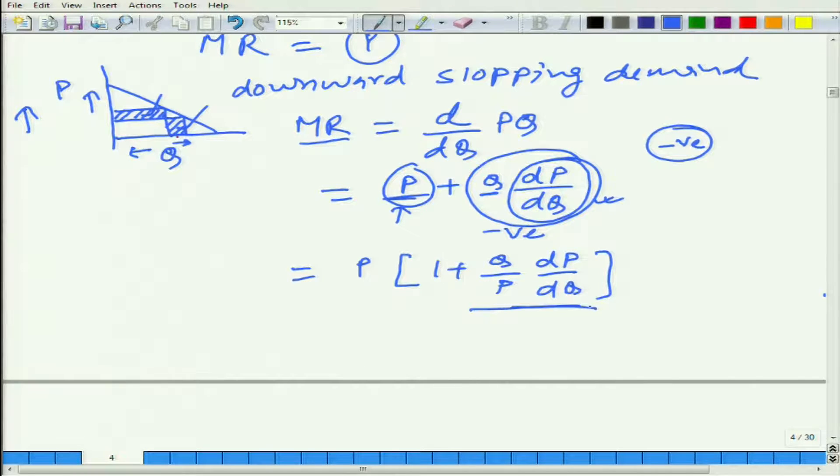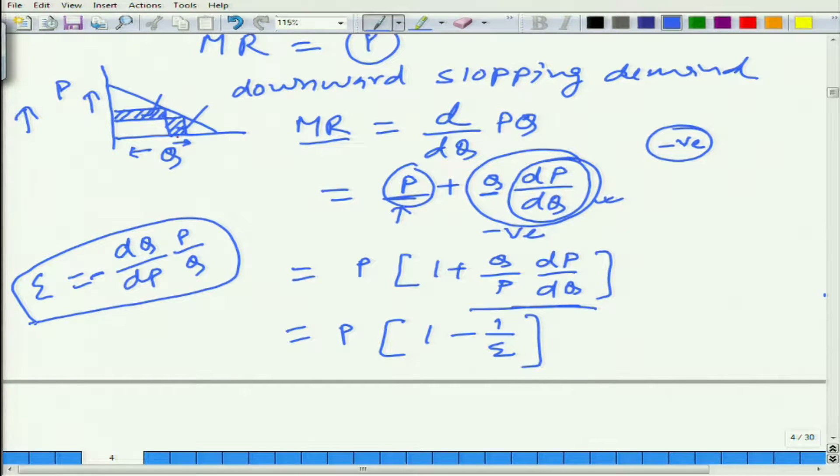It is inverse of elasticity. It is nothing but P times (1 - 1/ε), where ε is the price elasticity of demand, which is defined as -Q/P × dP/dQ. If you are using this definition, then the formula works out with the signs appropriately.